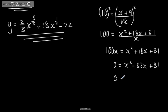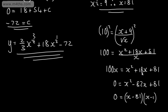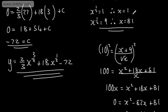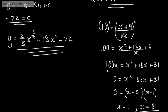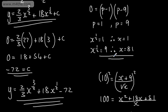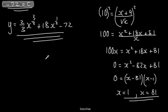This factors as x minus 81 multiplied by x minus 1, giving roots x equals 1 or x equals 81, as before. Either way, we get x equals 1 and x equals 81.